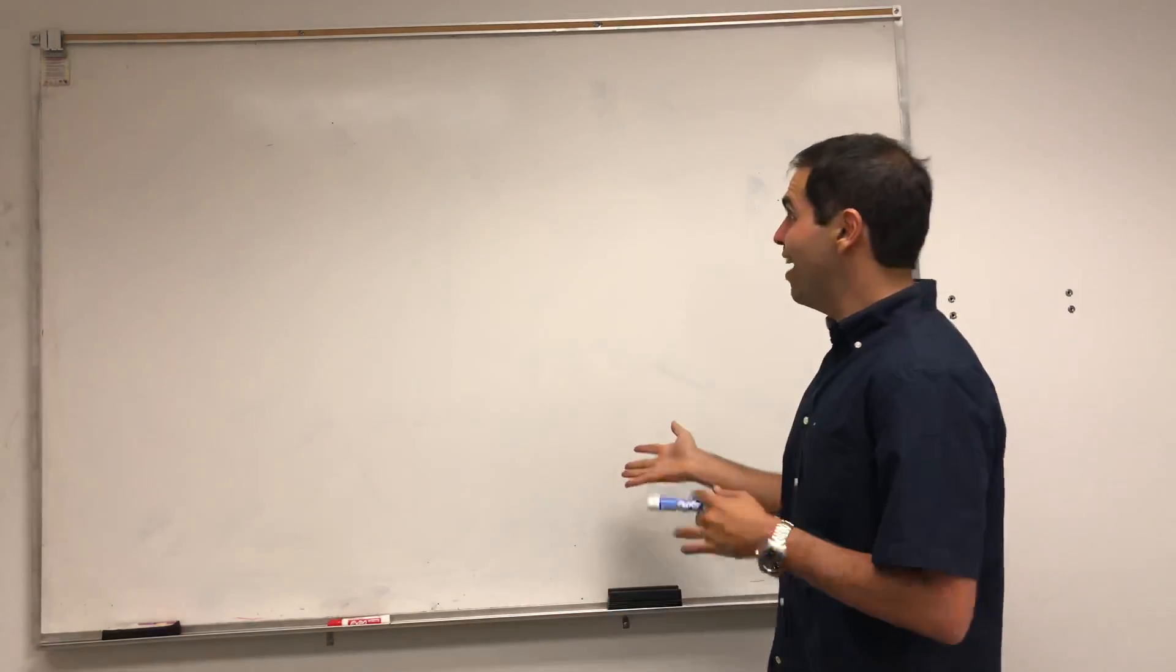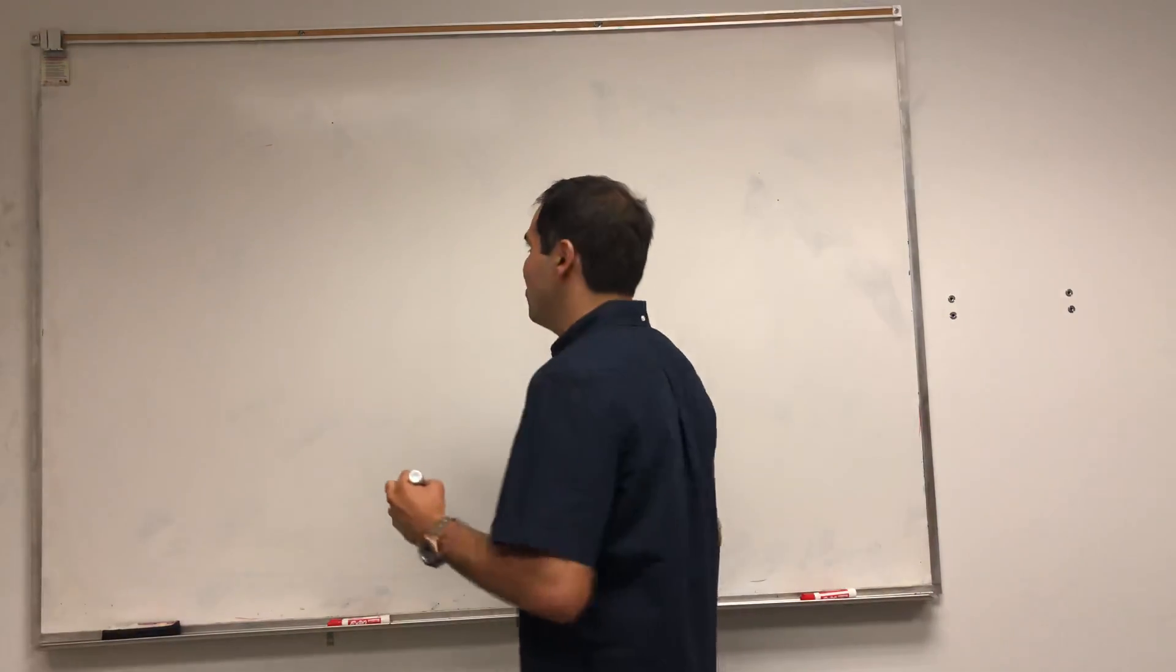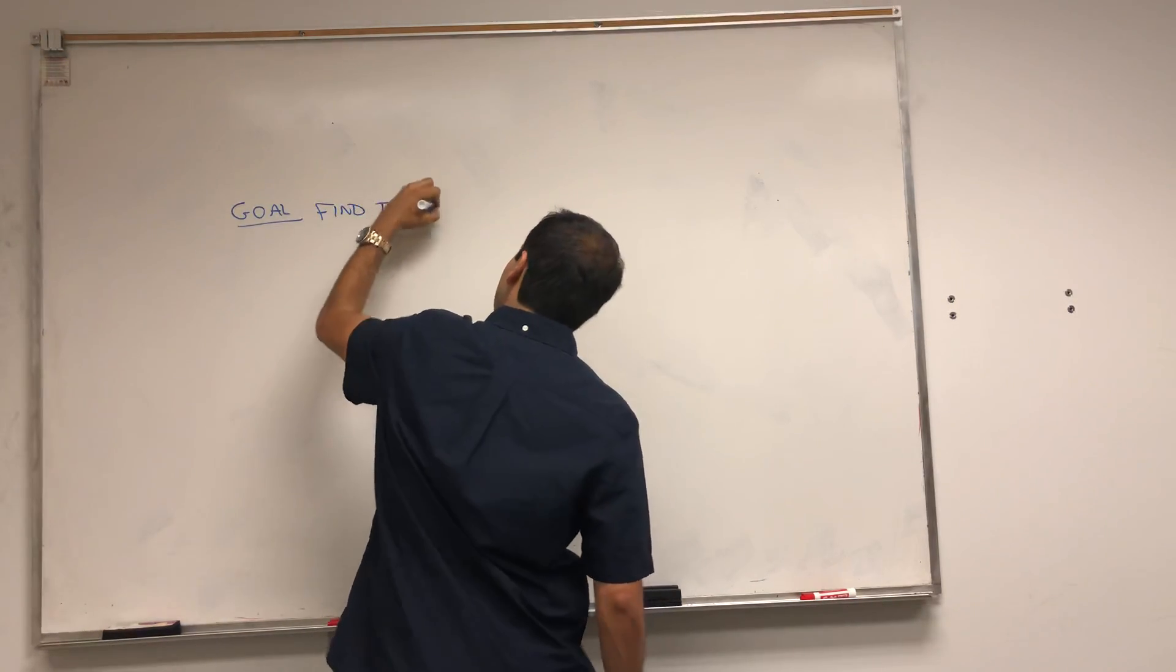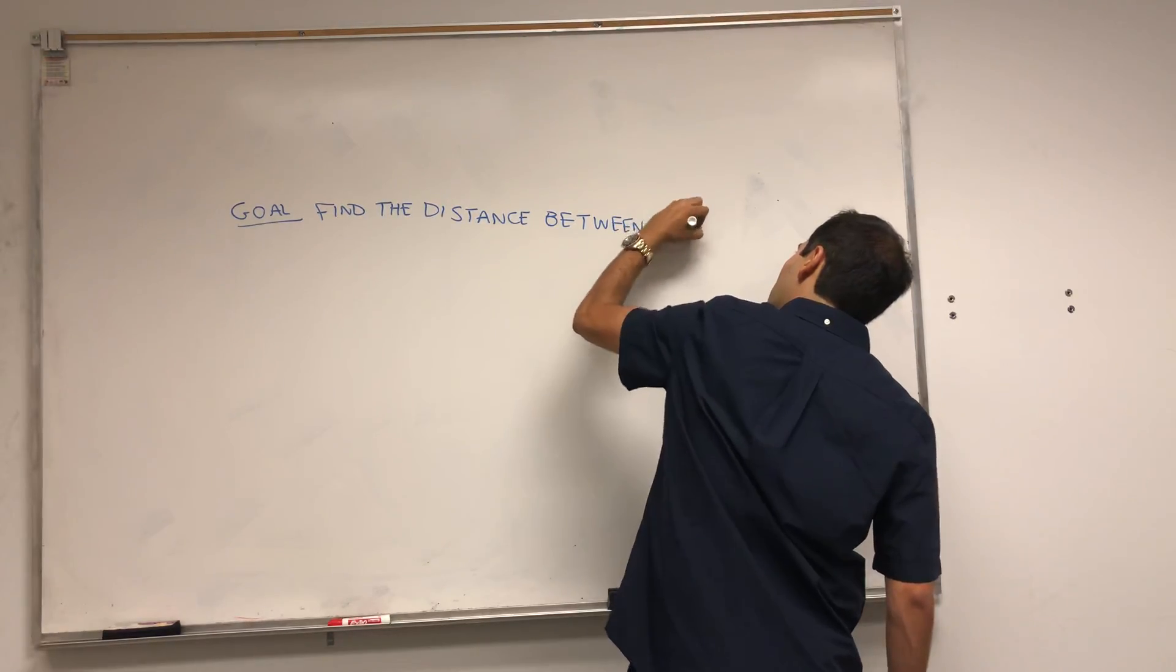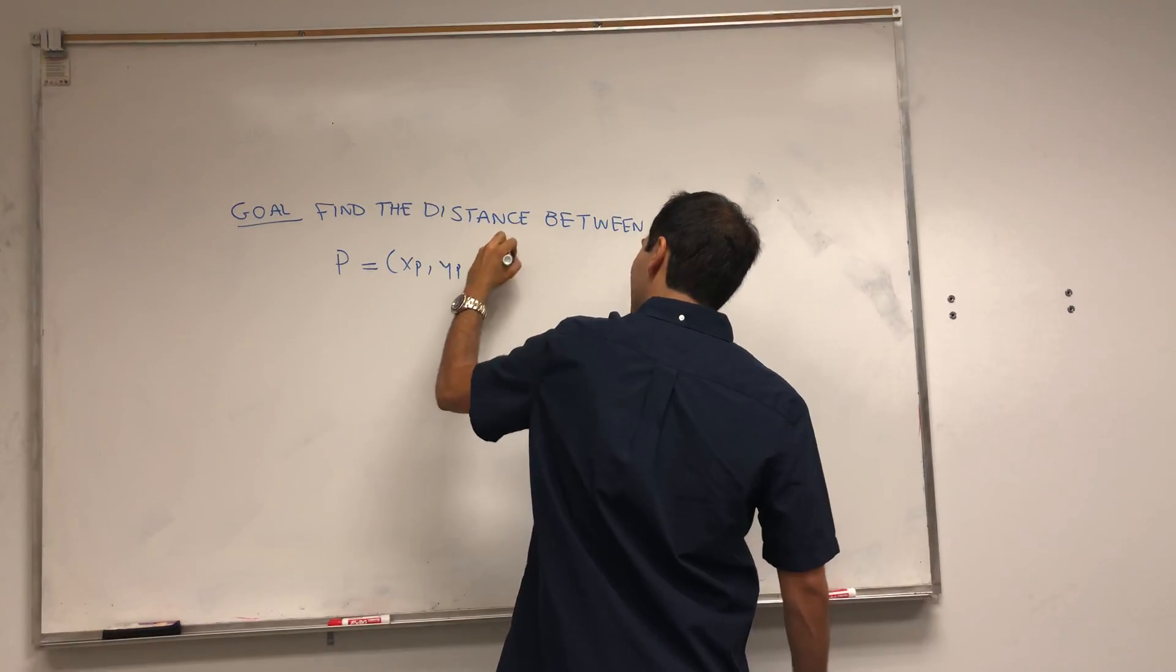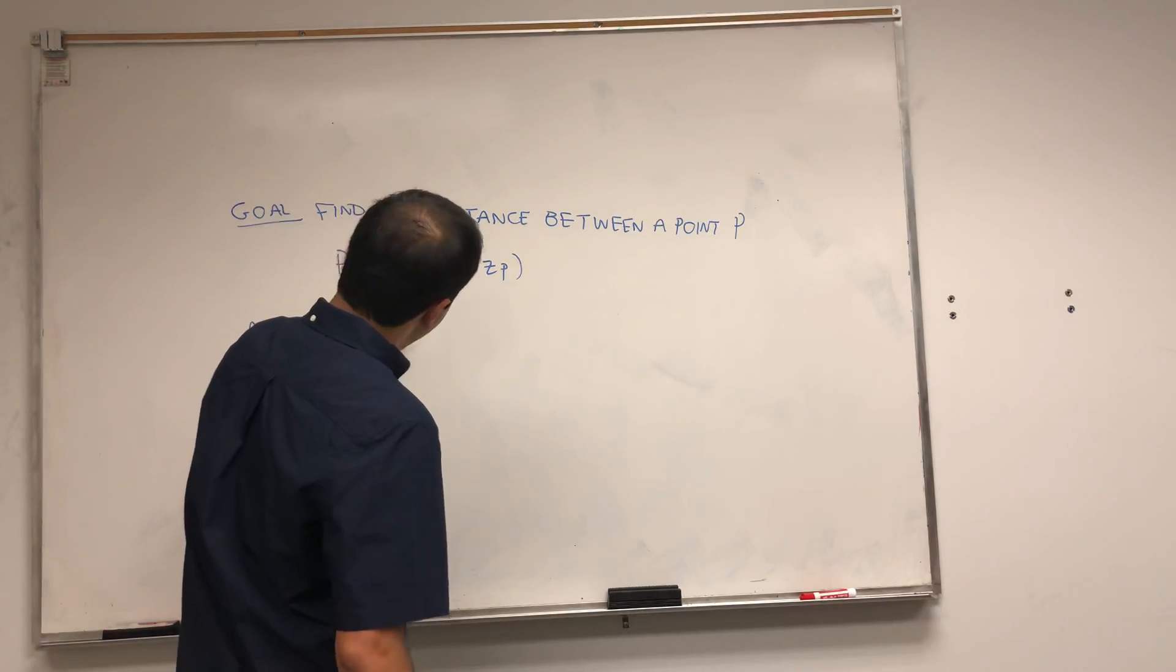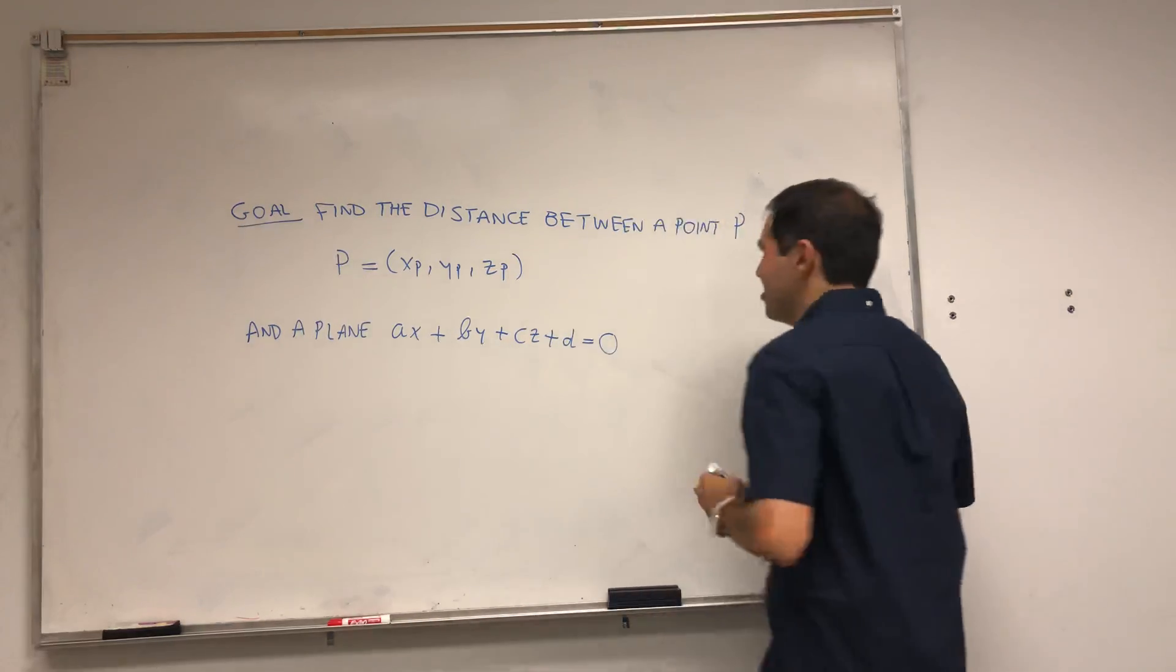Thanks for watching. Today I want to derive the formula for the distance between a point P and a plane, which is very useful in multivariable calculus. This is a bit improvised, so bear with me. Let's find the distance between a point P, which we'll write as P equals (xp, yp, zp), and a plane Ax + By + Cz + D = 0. You'll see it's very neat.